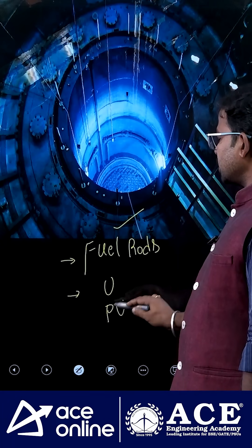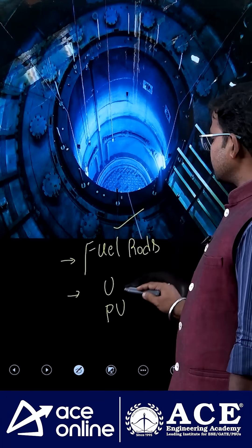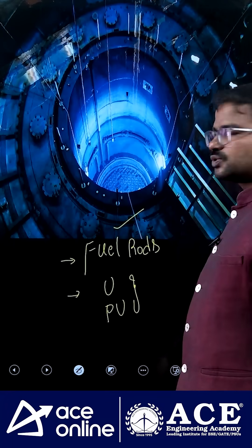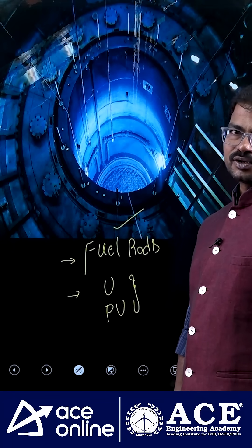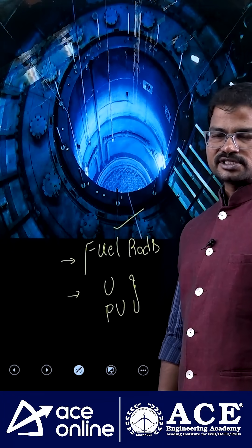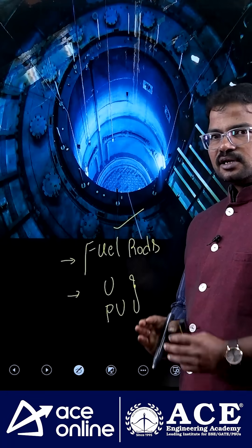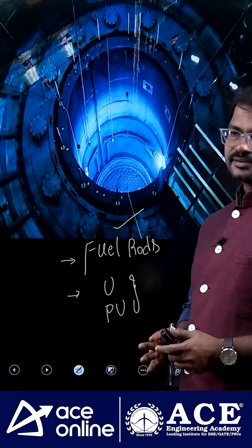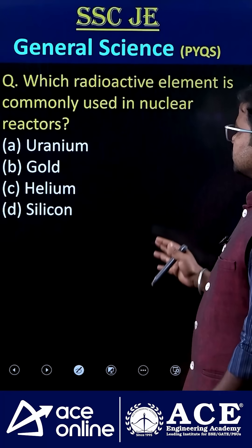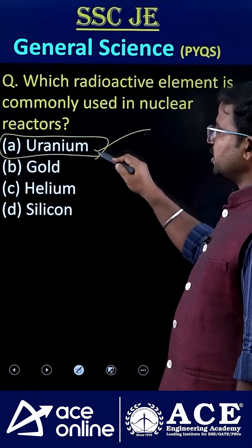In some reactors, plutonium can also be used. Especially in India, we are using these two types — uranium as well as plutonium. Of course, we have a bulk amount of thorium reserves, even though thorium-based reactors are not yet fully operational.